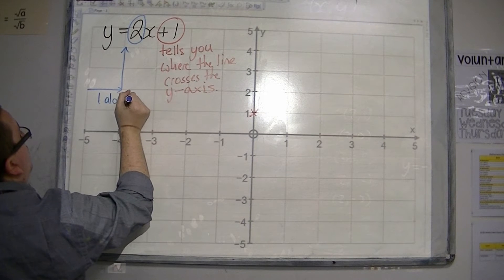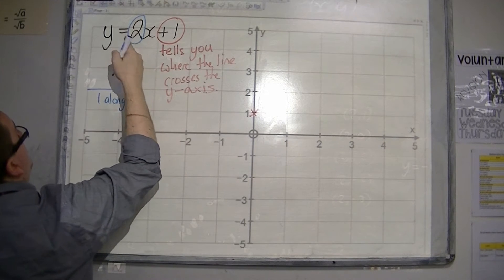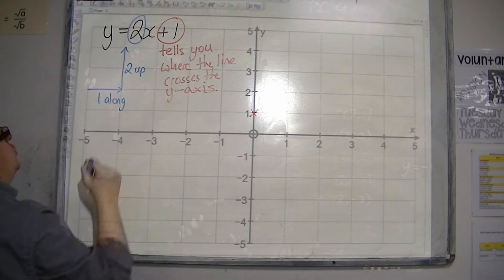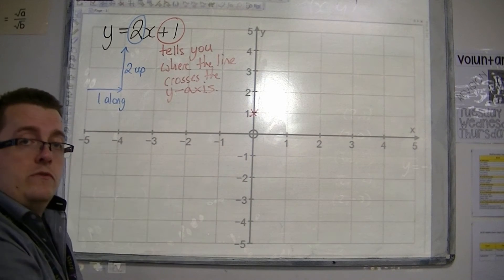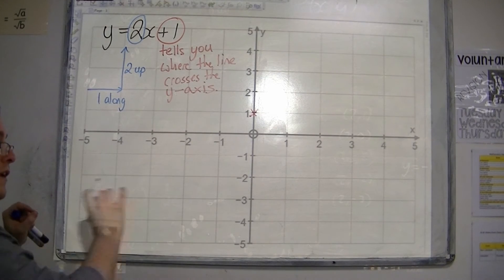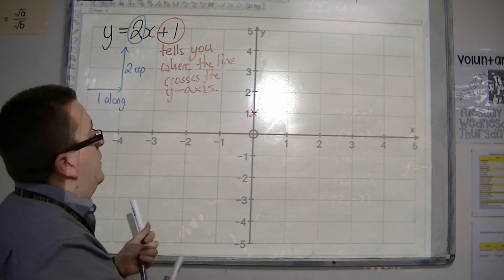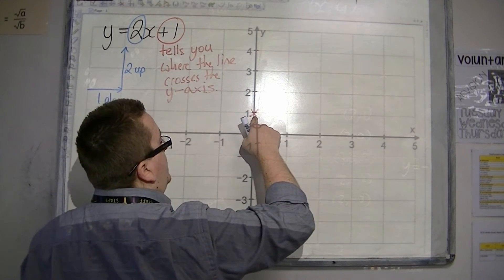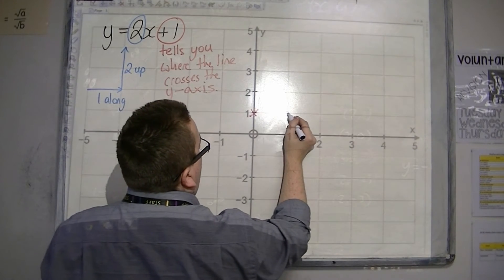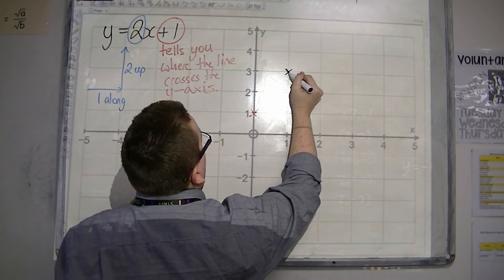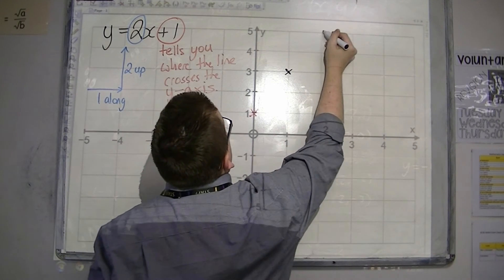You always go 1 along when you're measuring gradient, and the number that is in front of the x tells you how much you should go up or down. So for every 1 along, in this case I'm going 2 up. So from that initial point, I'm going to go 1 along, 2 up, make a cross. 1 along, 2 up, make a cross.